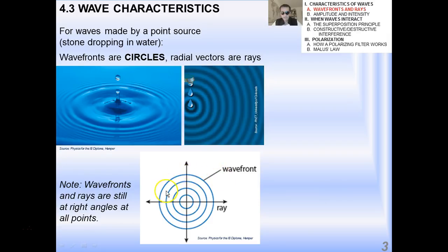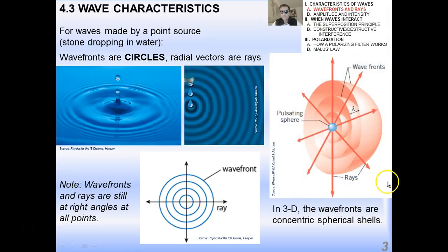I want you to note that the wavefronts and rays are still at right angles to one another at all points. Even though the wavefront is circular, still, at those infinitesimally small points in space, the ray and the wavefront are at 90 degrees to one another.